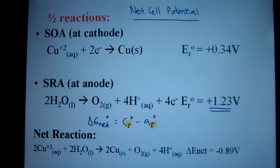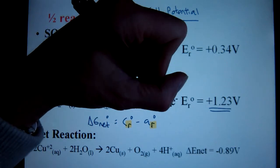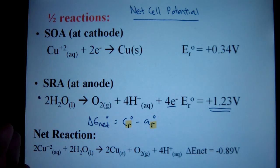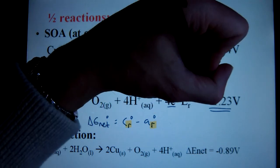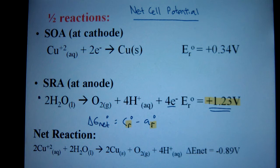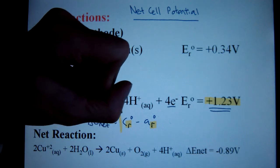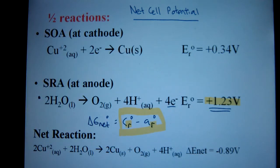Despite the fact that we always reverse our anode half reaction to show loss of electrons, we still do not reverse or change the sign of our anode voltage. I just leave it the exact same way it is. The minus sign in my net cell reaction formula takes care of that.